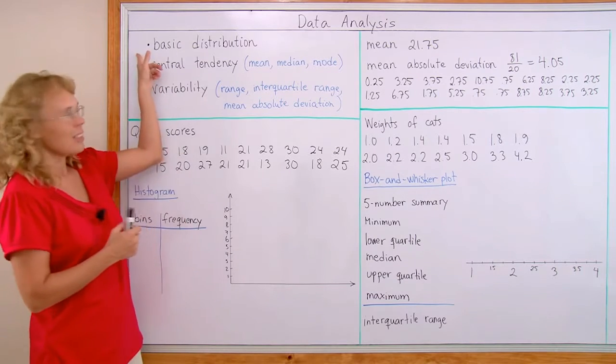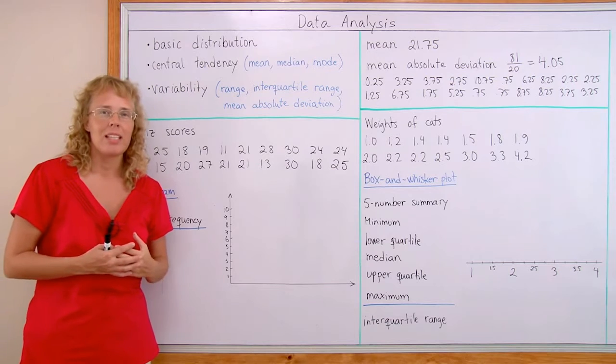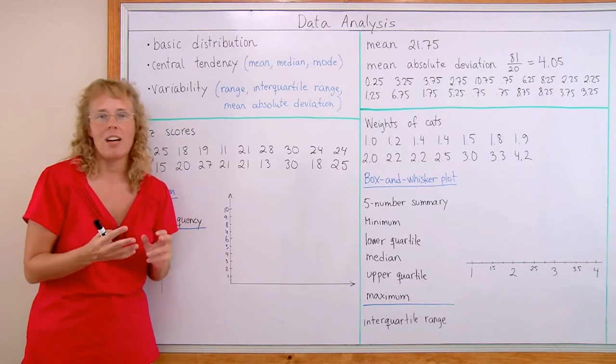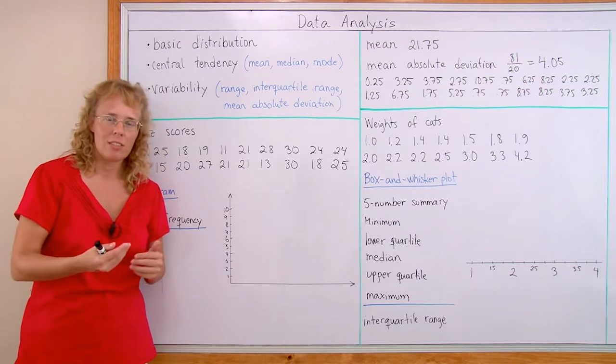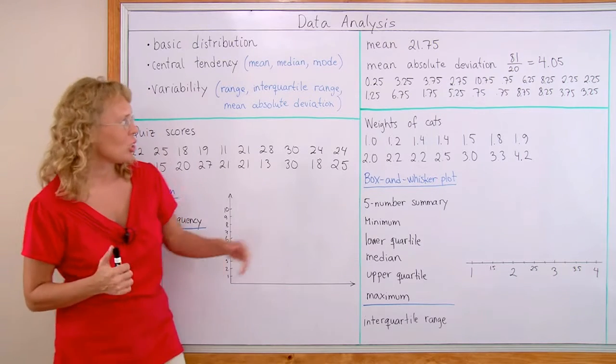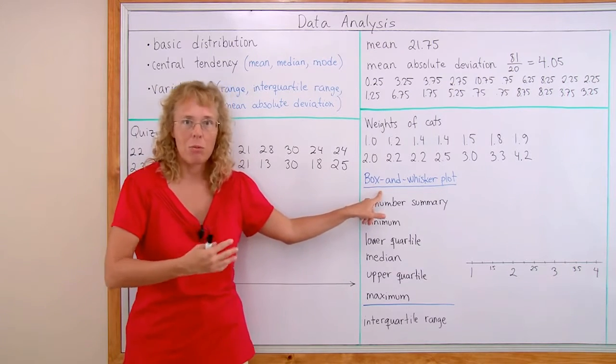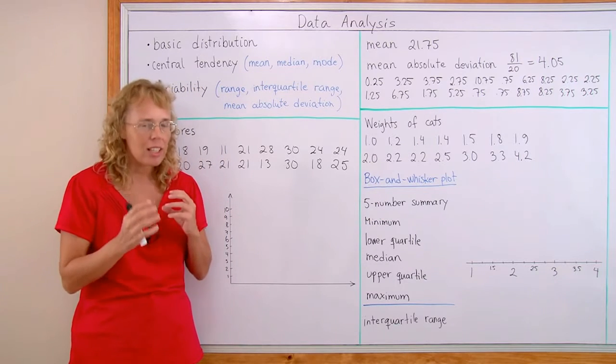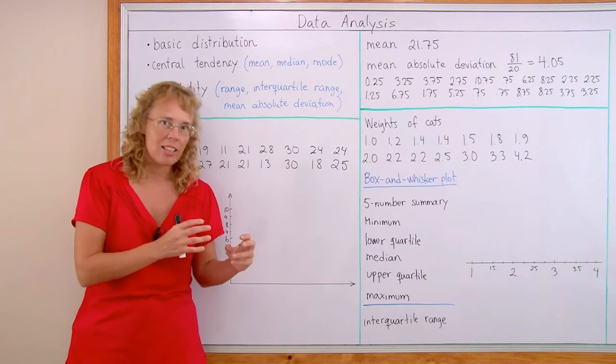One of them is the basic distribution. That basically means the basic shape if you have a bar graph, the basic shape of the graph. Or you might have some other kind of graph, for example we're going to use a box and whisker plot here later. What's the basic distribution, basic idea, where the data lies.